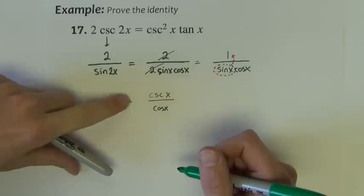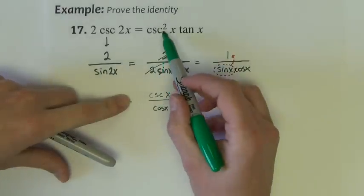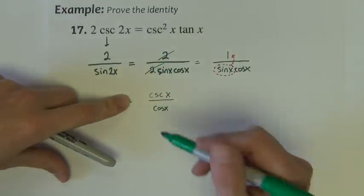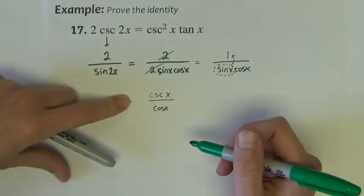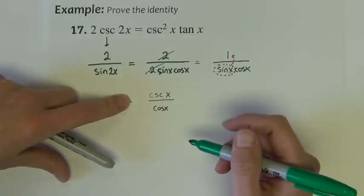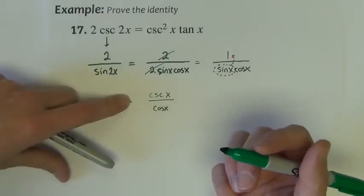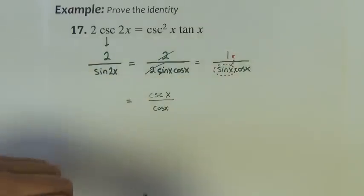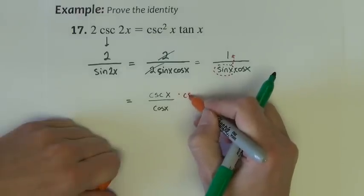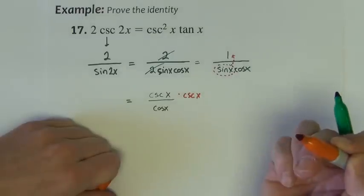I don't want cosecant x, I want cosecant squared x. So how could we get cosecant squared x? To get cosecant squared, I need to multiply by another cosecant.